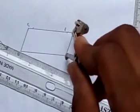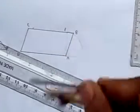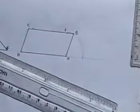With center A, draw an arc to cut the extension at G. So this arc cuts the extension at G here. This point G is on the line DA.